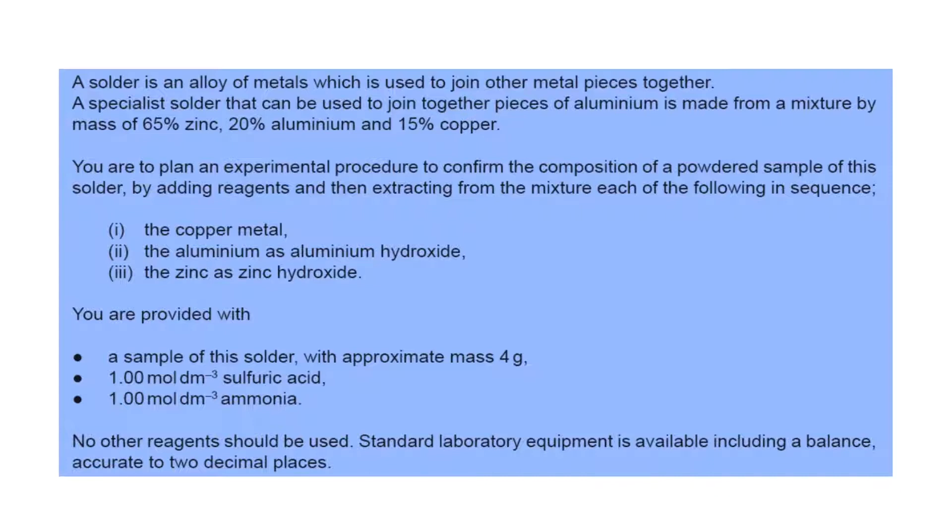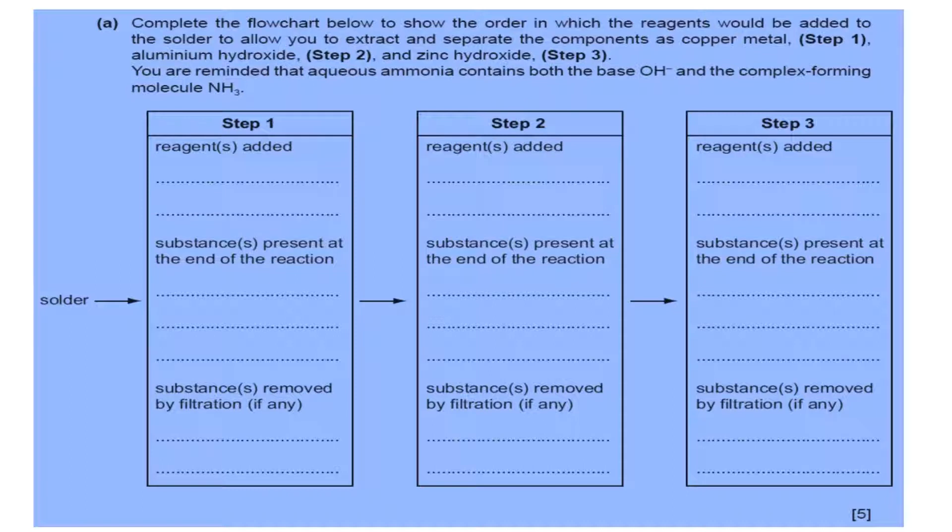To extract these metals, the first step is to use sulfuric acid. The sulfuric acid reacts with zinc and makes zinc sulfate, reacts with aluminum and makes aluminum sulfate, and copper remains unreacted. The unreacted copper can be separated by filtration.